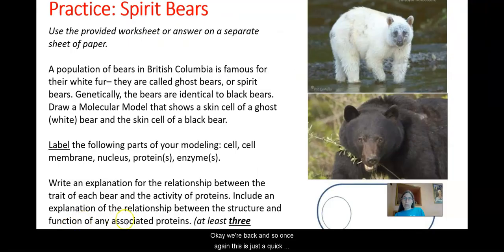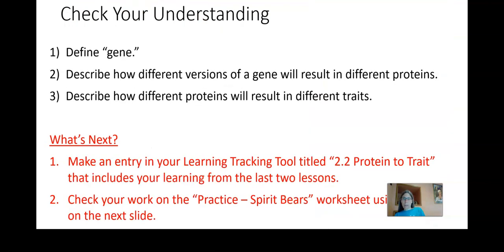Okay. We're back. And so once again, this is just a quick review about your worksheet. And the fact that we have these two bears, and we're going to try to explain why they have a different pigment, one being white, one being black. We have the model of the cell, which you want to label. Okay. And then you're going to have your explanation for this difference in color. Now we're going to go ahead and look at that answer.